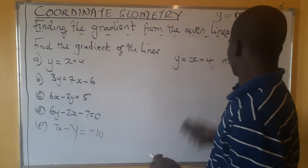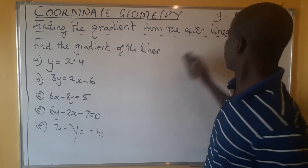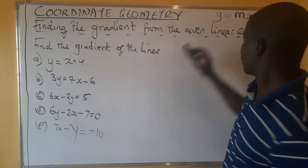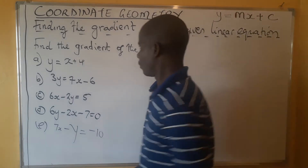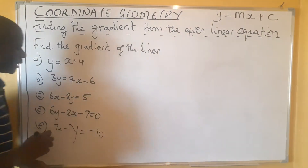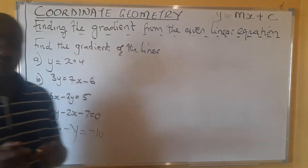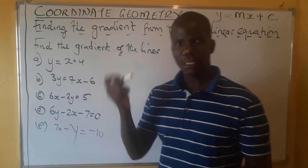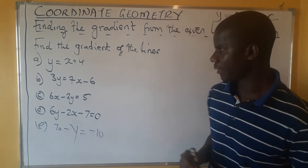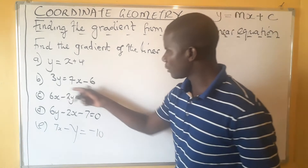Now we look at the second one. Remember, to determine the gradient we need to write our equation in the form y = mx + c. We need to make y the subject of the formula — we are solving for y — then we get the coefficient of x.